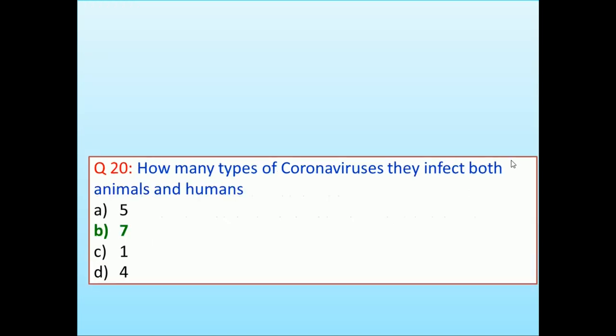How many types of coronaviruses infect both animals and humans? 5, 7, 1, 4. Answer is 7.